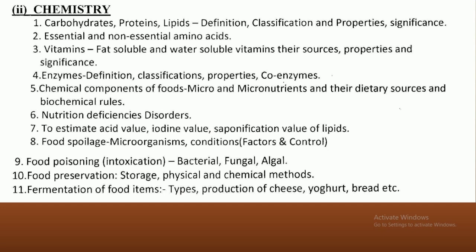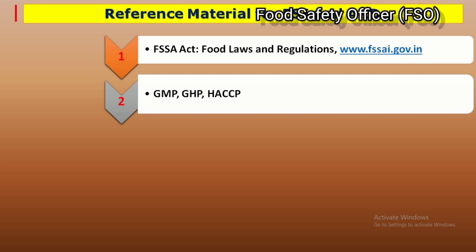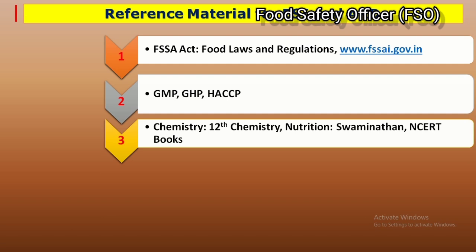With concern to reference material, for the Food Safety Standards Act, the basic book is 'Food Laws and Regulations.' Different notes are also available on the FSSAI website, which is a standard reference. You also need to study GMP, GHP, and Hazard Analysis Critical Control Point (HACCP) — know the seven principles of HACCP in sequence. For Chemistry, follow 12th standard chemistry and the book 'Food and Nutrition' by Swaminathan. NCERT books are also useful.